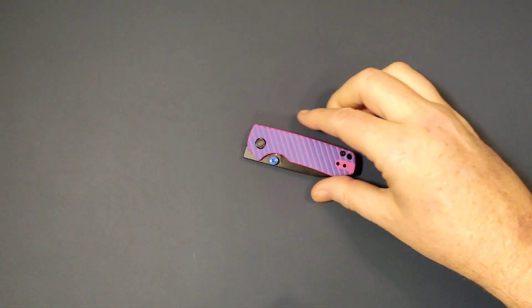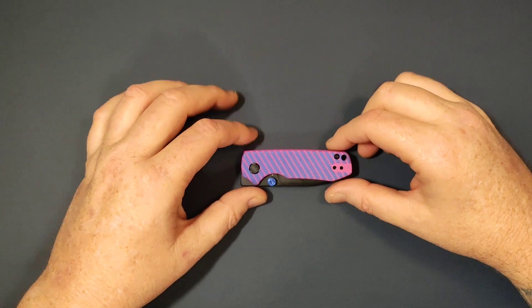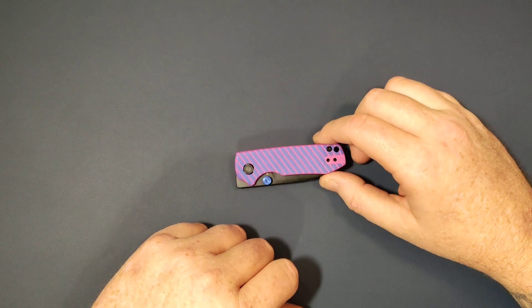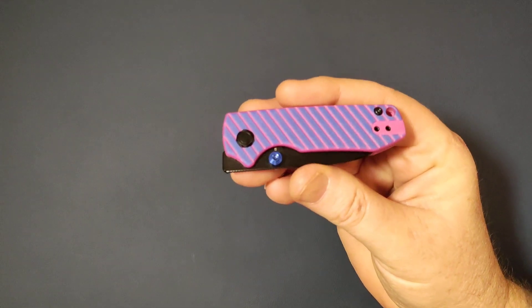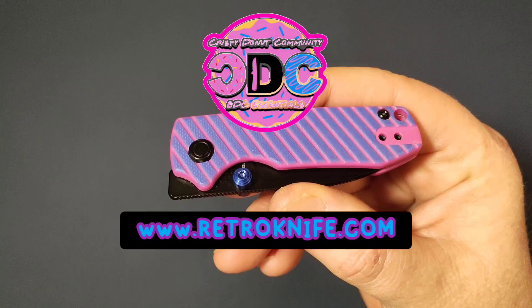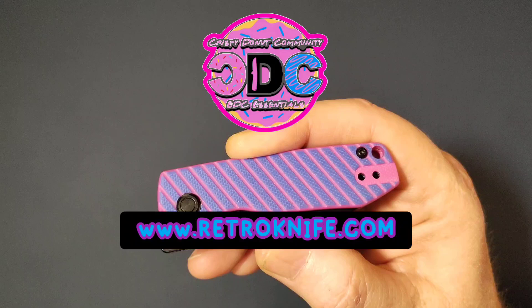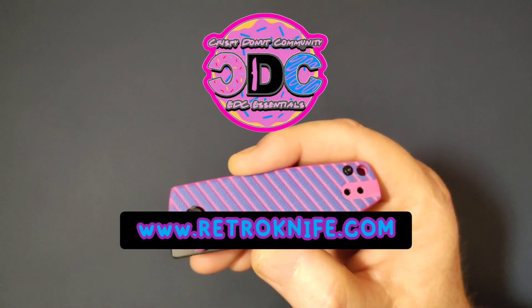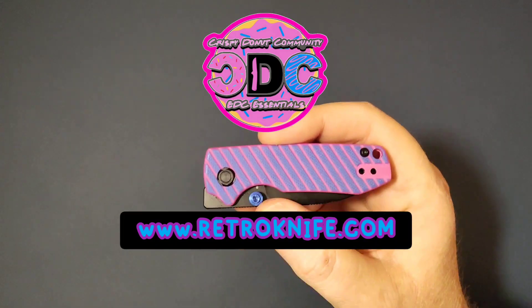Anyway folks, that's gonna do it. Do me a favor, if you haven't subscribed already, hit that subscribe button. If you hit that like button for me I sure would appreciate it. Go back watch some of my other videos. You might find something useful, you might find something informative, or you just want to kill a little bit of time. That's okay with me too. Head over to retroknife.com September 1st, get your preorder for the Crispy Donut Community and Vosteed Raccoon Cub. That's gonna wrap it up folks. Until next time, stay safe, take care, bye bye.